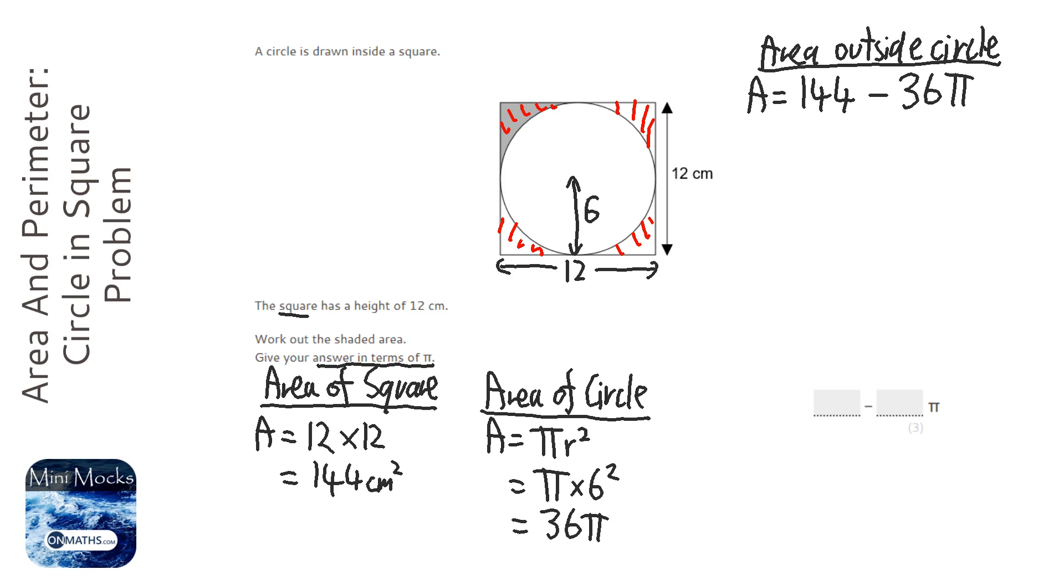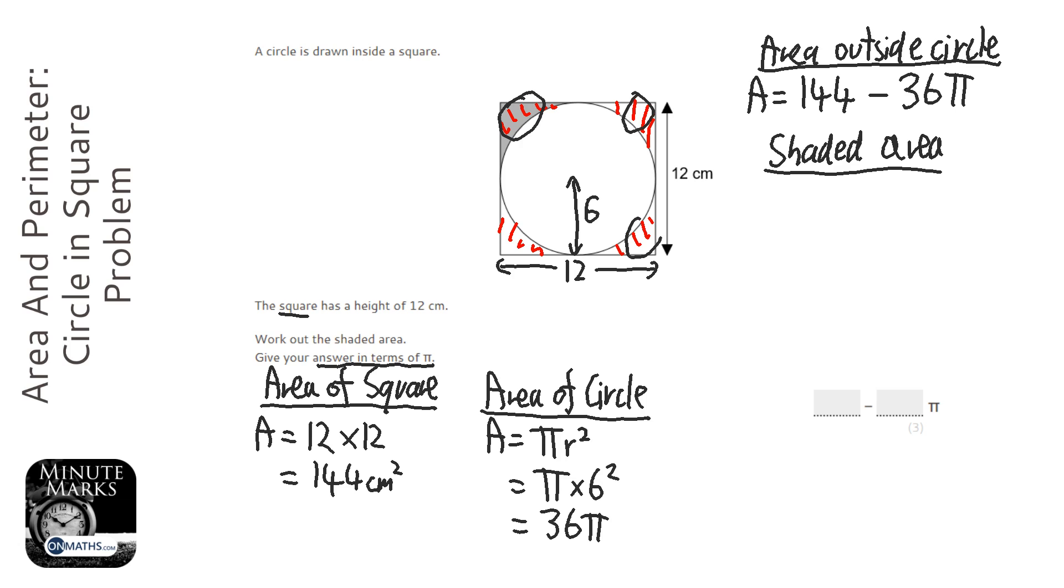Now to work out the shaded area, which is what the question asked for. Looking at that, we've got four parts. We've got this part, this part, this part, and this part. All four of them are equal, and we only want one of them. So to work out the shaded area, we get our answer from before and divide it by 4.